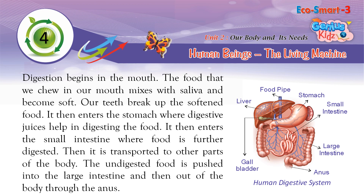Digestion begins in the mouth. The food we chew mixes with saliva and becomes soft. Our teeth break up the softened food, and it then enters the stomach where digestive juices help in digesting the food. It then enters the small intestine where food is further digested and transported to other parts of the body. The undigested food is pushed into the large intestine and then out of the body through the anus.